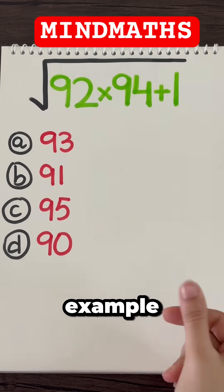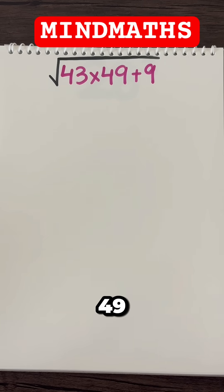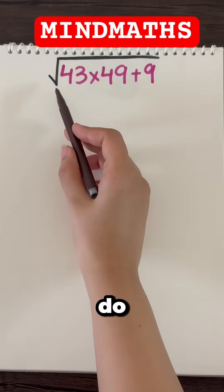To understand this, first come to this example. Look, this is 43 into 49 plus 9. How will you do this?